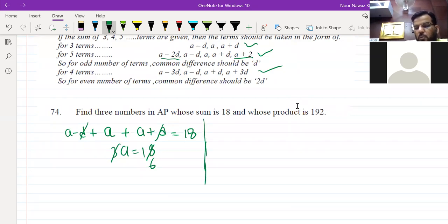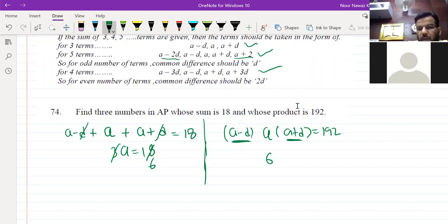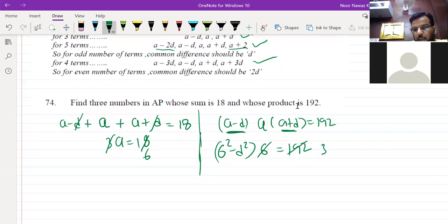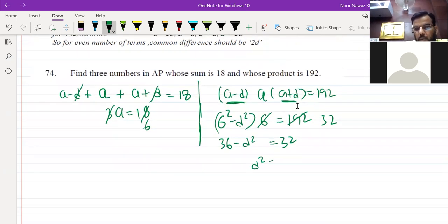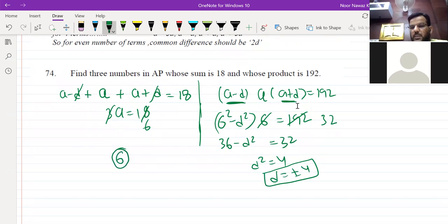So this means at least you have to know the middle term, that the middle term is 6. Then you have given the product, so a, a minus d, and a plus d, this is the product and the product is 192. Basically a you have to keep 6, and this is a minus d and a plus d, a square minus d square, and then you have to keep 6. And how much is this? We have to keep 6, so plus minus 2, yes, plus minus 2.